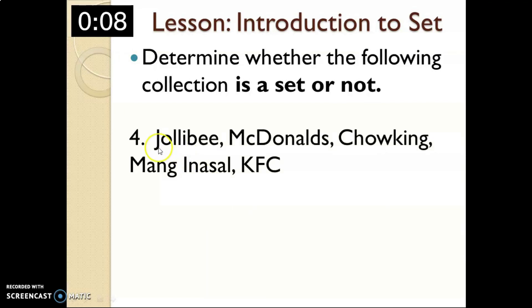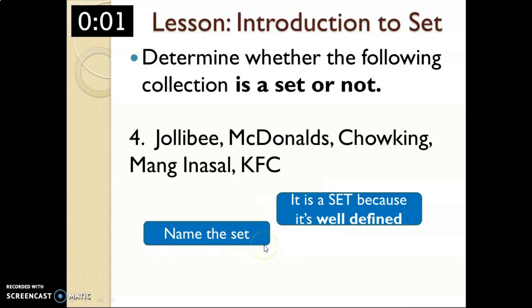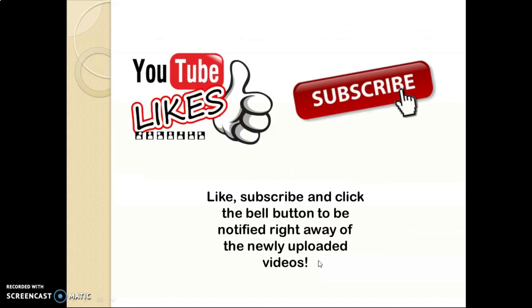Practice problem four: Jollibee, McDonald's, Chowking, Mang Inasal, and KFC — do these things have a relationship with one another? Yes, so it is a set. Name the set — it is a set of fast food chains. Recap: a set is a collection of well-defined objects. It must be a collection and at the same time well-defined, meaning you can easily identify the relationship or common characteristics of the objects. A collection is not a set if it is not well-defined or if the common characteristics cannot be identified. That's all for our lesson on sets.